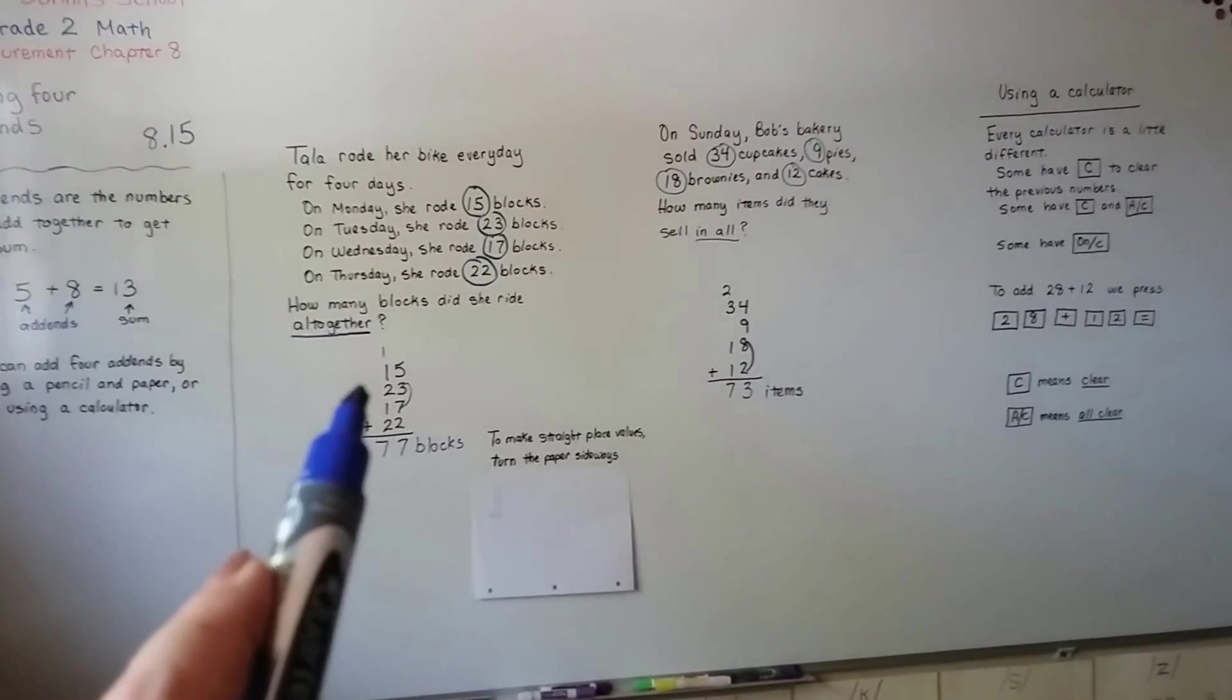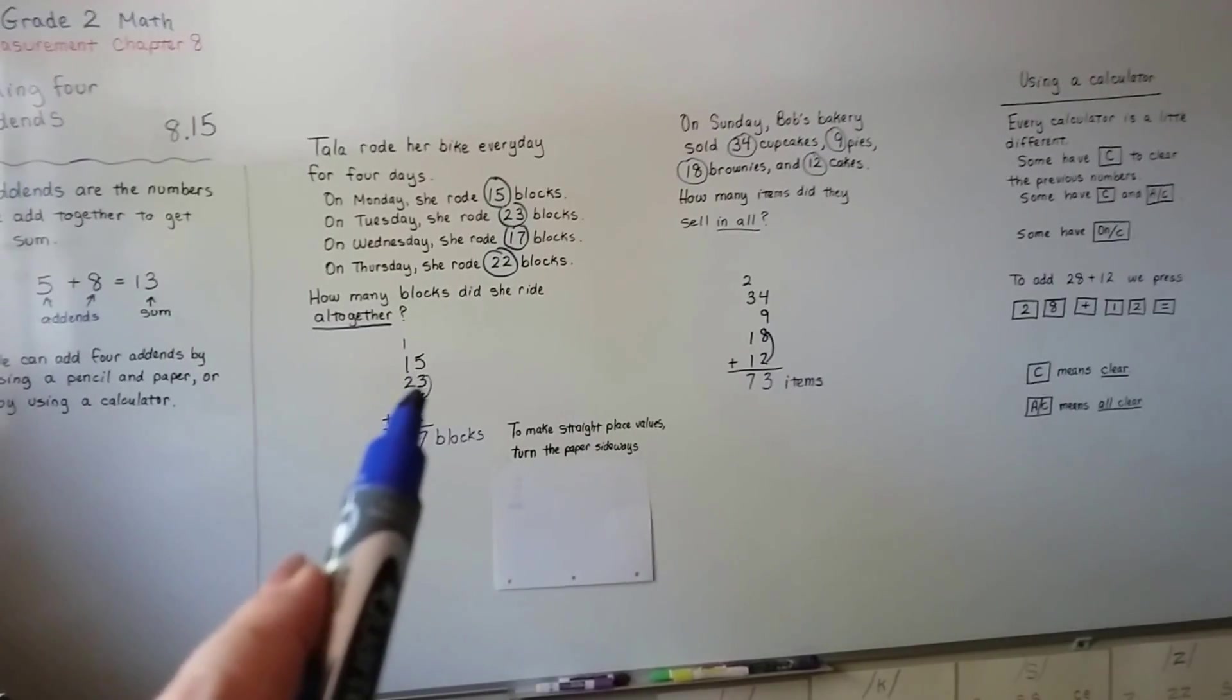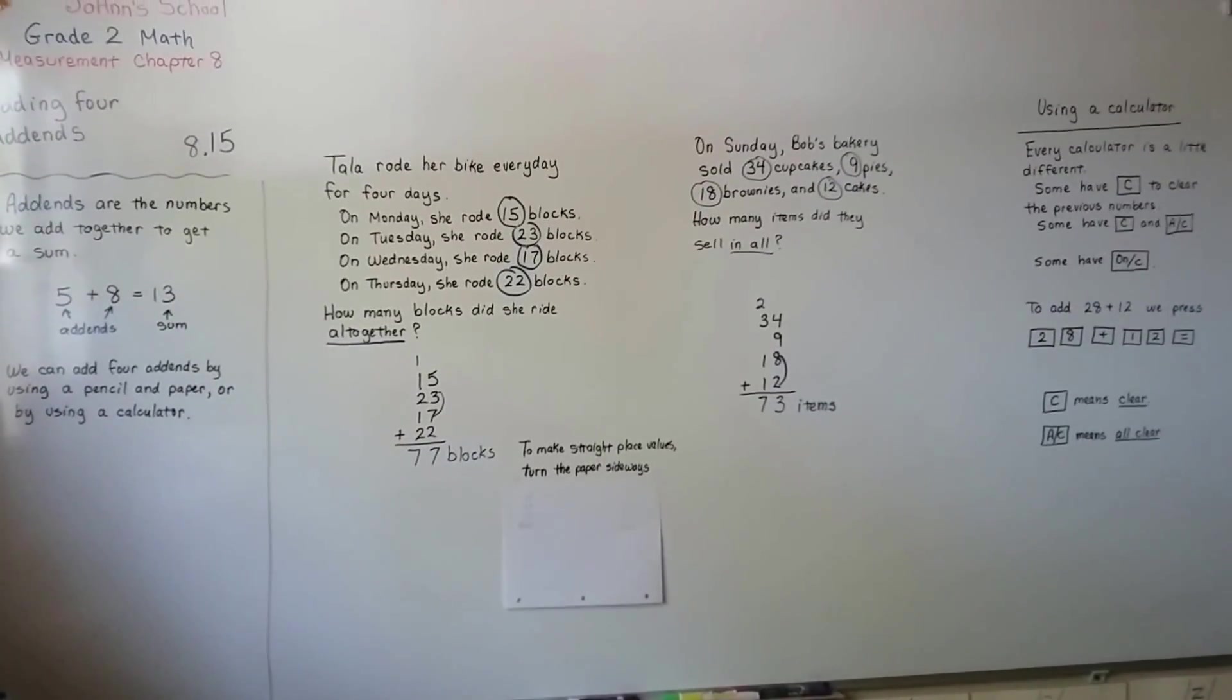And every number you put in, like after 28, after you hit the 2 and the 8, you have to hit plus. And after you add the 2 and the 3 for 23, you have to hit plus. So after every single number, you have to hit plus, and then it'll give you the total.